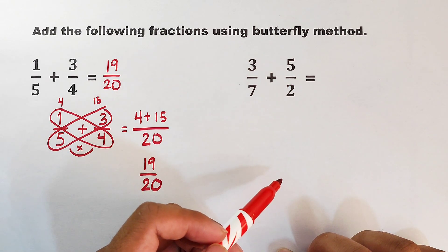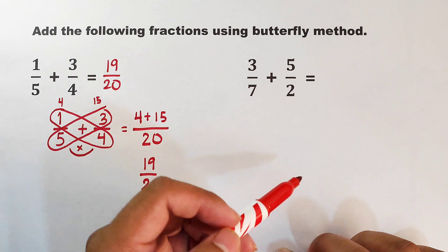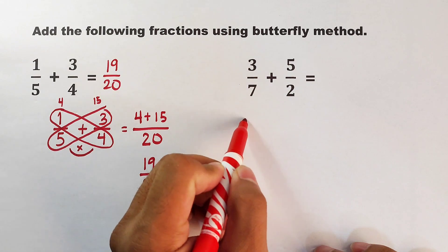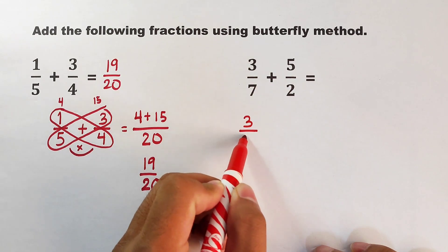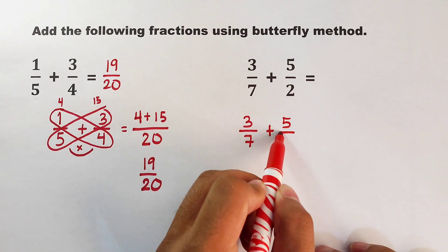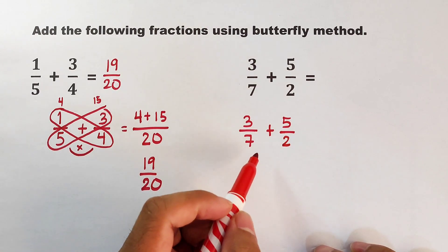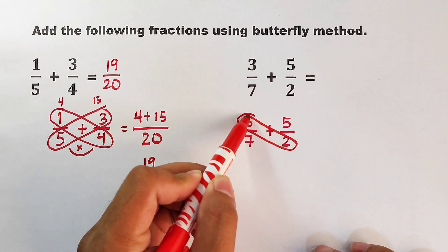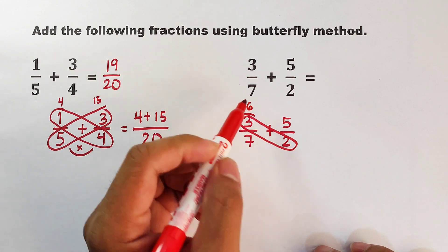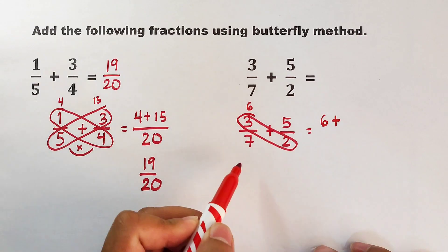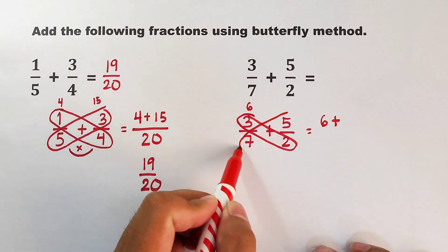3/7 + 5/2. Okay, let's try answering the second problem. We have 3/7 + 5/2. To apply the butterfly method, multiply these numbers: 3 times 2, that would be 6, which equals 6. Plus, multiply these numbers: we have